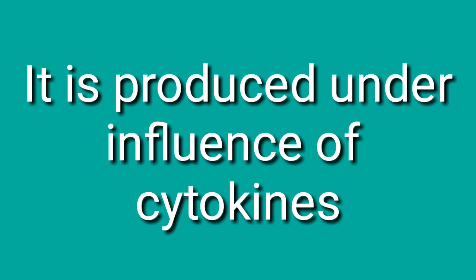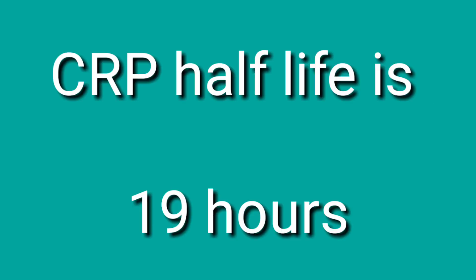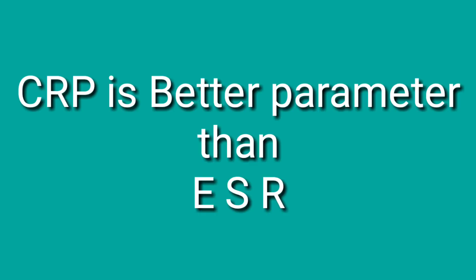CRP is predominantly found in hepatocytes and is produced under the influence of cytokines such as interleukin-6 and tumor necrosis factor. CRP has a half-life of 19 hours and is a better parameter than ESR.